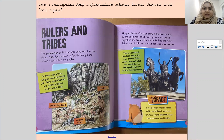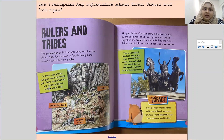The population of Britain was very small in the Stone Age. People lived in family groups and weren't controlled by a ruler. In Stone Age groups, everyone had a different job — some people hunted and others prepared food or made tools. You can see some people preparing food, some making tools and some people hunting.